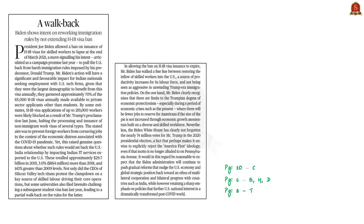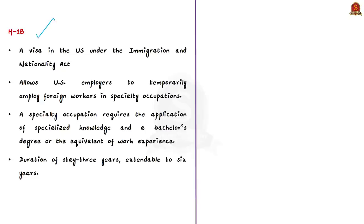The next discussion is based on an editorial article about the H-1B visa of the USA. On 2nd April, the US government allowed the expiration of the ban on H-1B visas. The H-1B visa is a visa under the Immigration and Nationality Act of USA, allowing US employers to temporarily employ foreign workers in specialty occupations — roles requiring specialized knowledge and a bachelor's degree or equivalent. The duration of stay is three years, extendable up to six years.